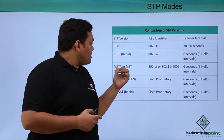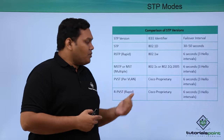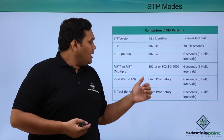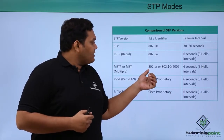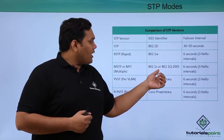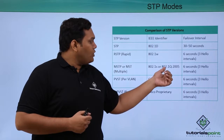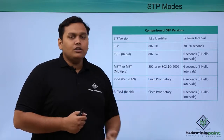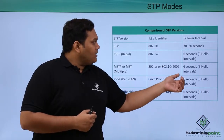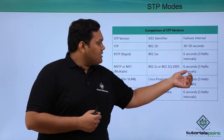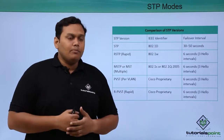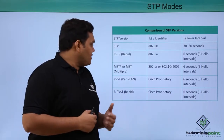MSTP, or Multiple Spanning Tree Protocol, has the identifier 802.1s or 802.1q-2005, and a failover interval of 6 seconds consisting of 3 hello packets or messages.